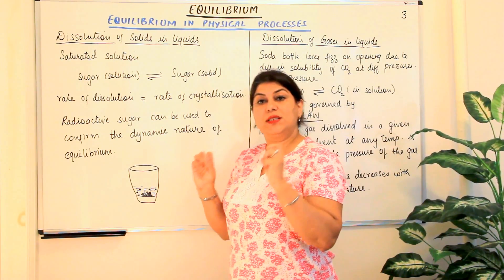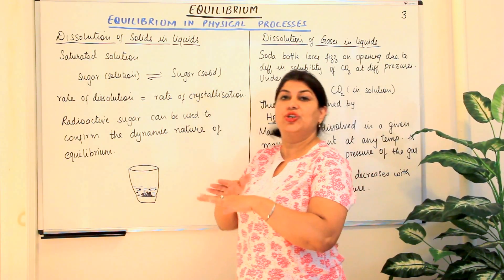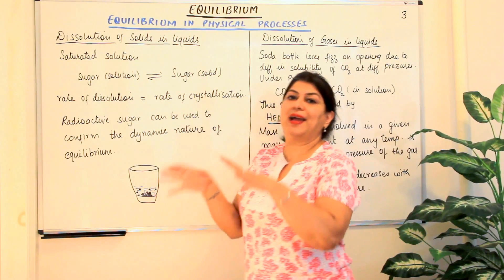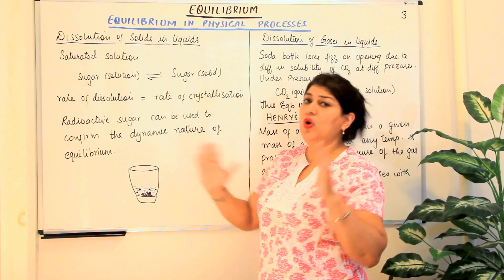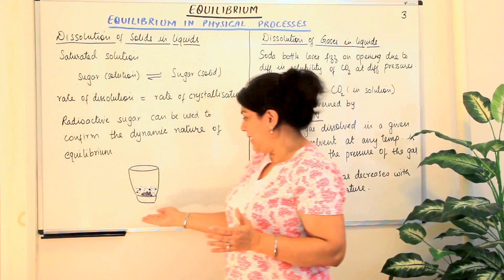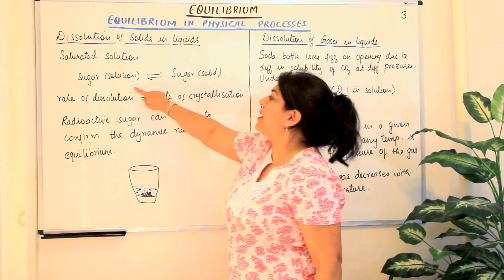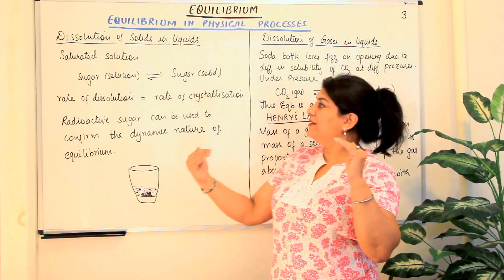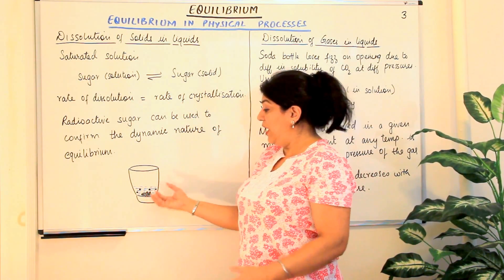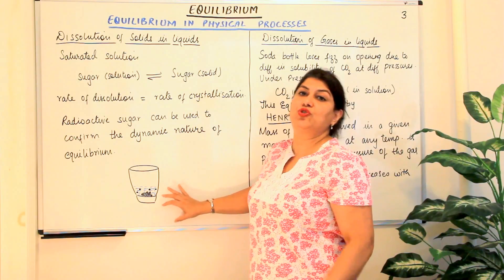This means that constantly the molecules present in the crystals of sugar are leaving the crystal and joining the solution. At the same time, the same number of sugar molecules are going back and forming crystals of sugar at the bottom. Two opposing processes are taking place — the dissolution of sugar and the crystallization of sugar from the solution — simultaneously. Where the rates of both processes become equal, equilibrium is established. If you calculate the mass of the undissolved sugar and the dissolved solution, it will remain constant.